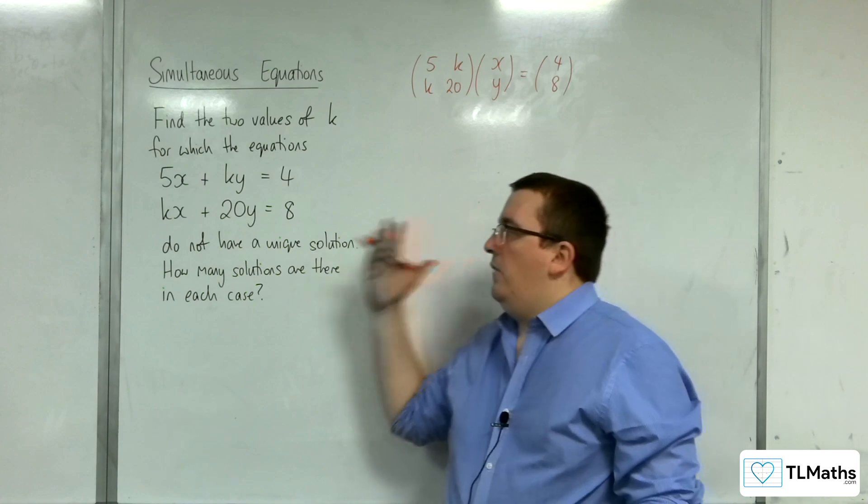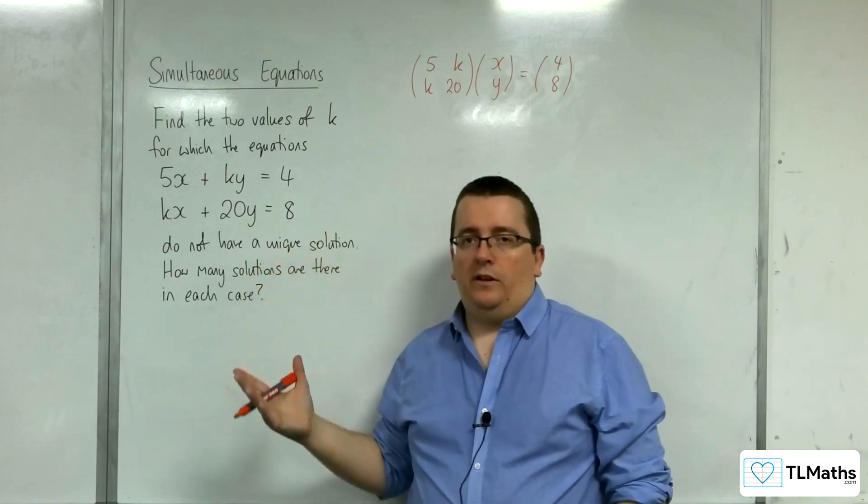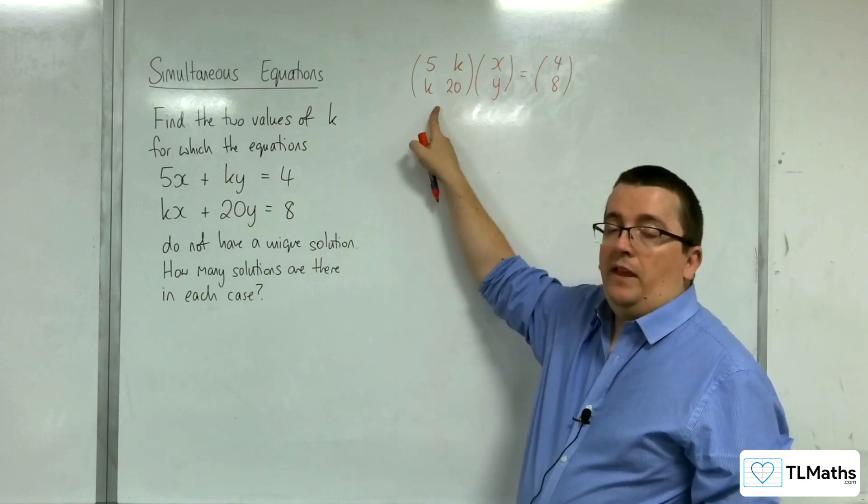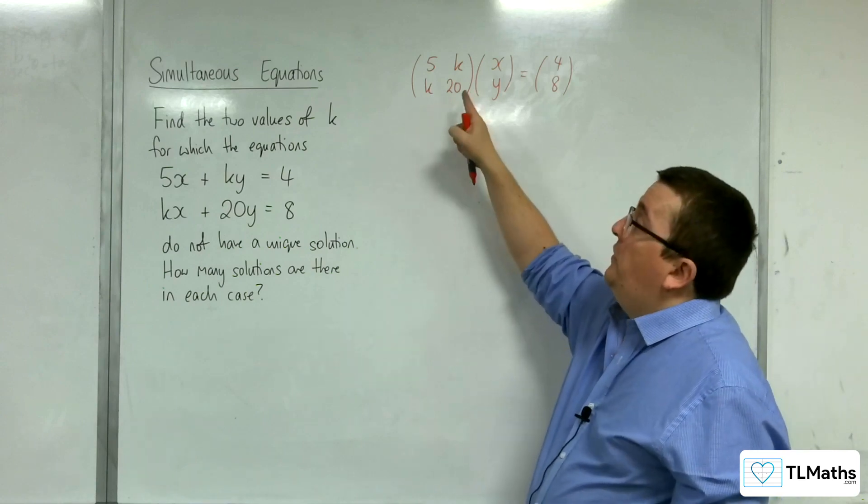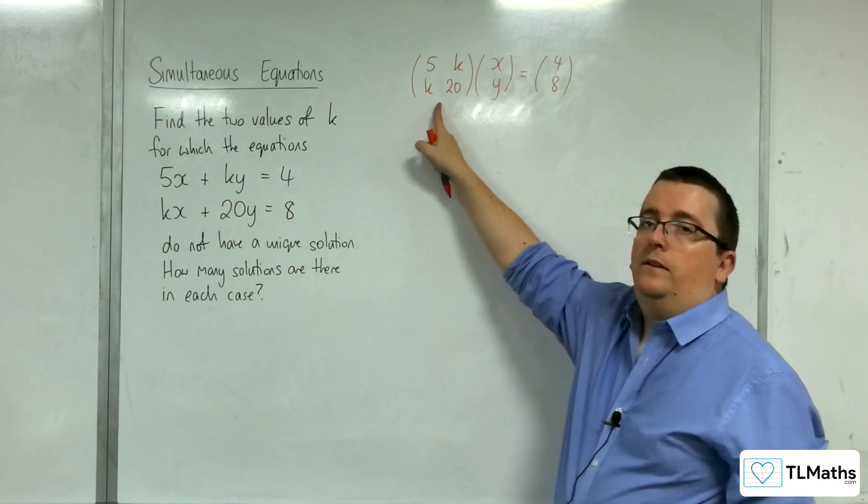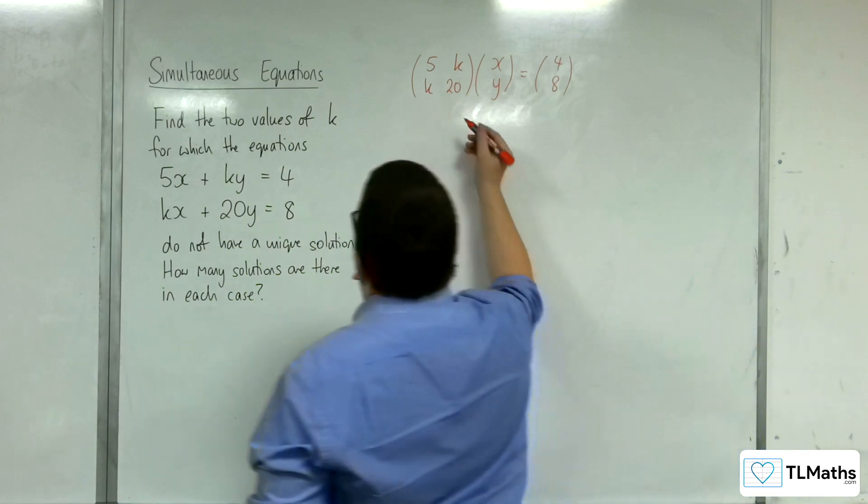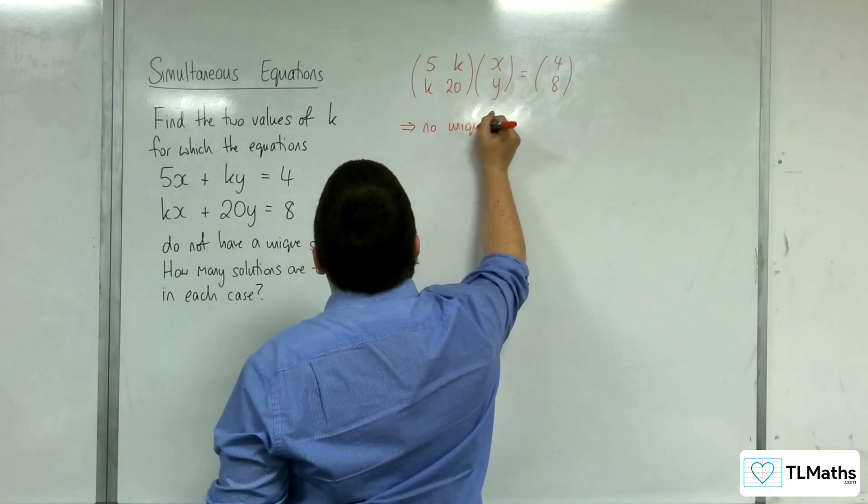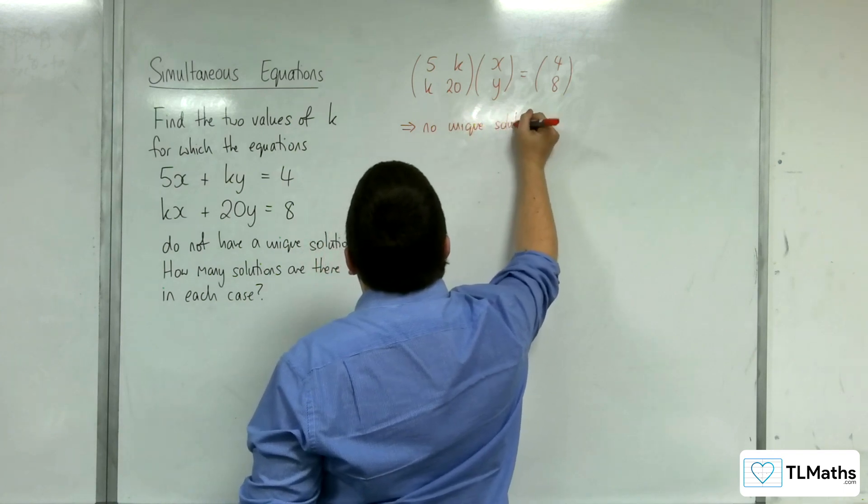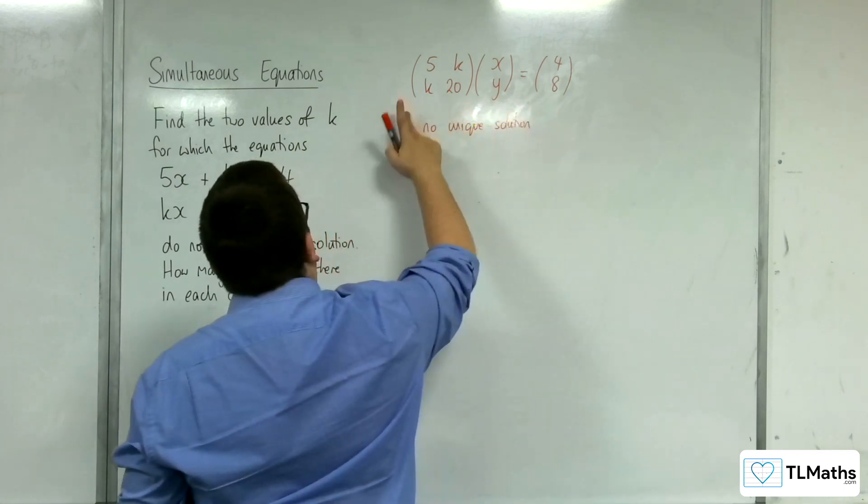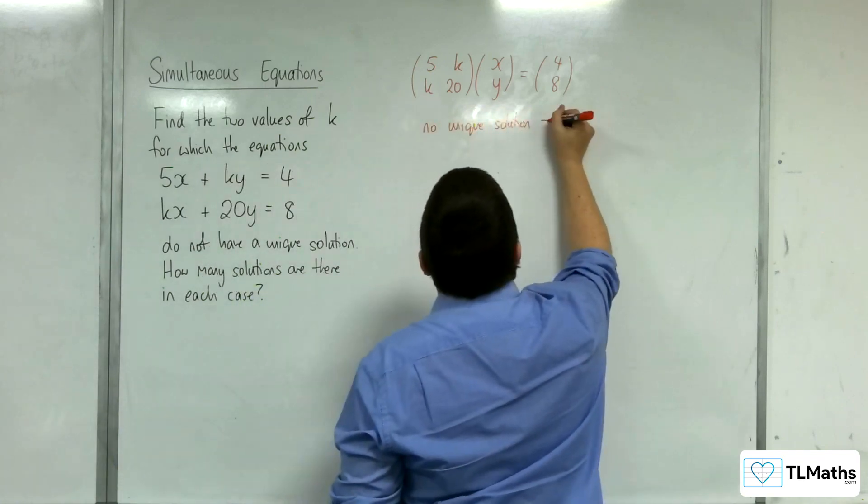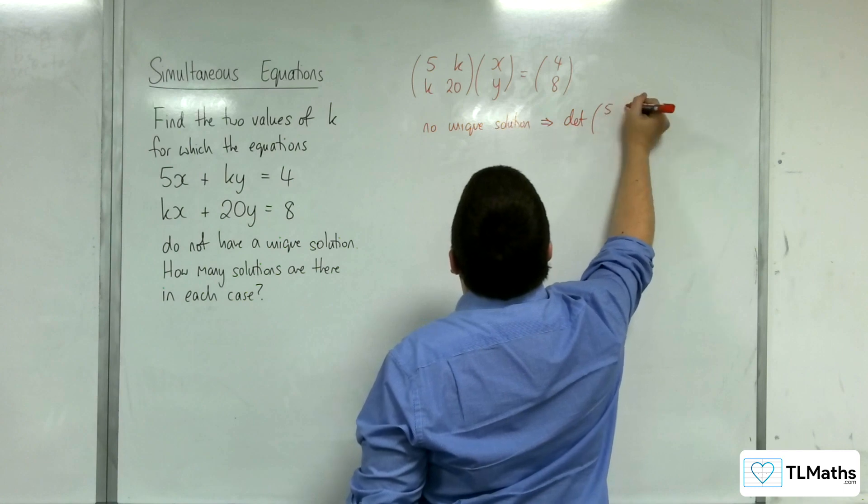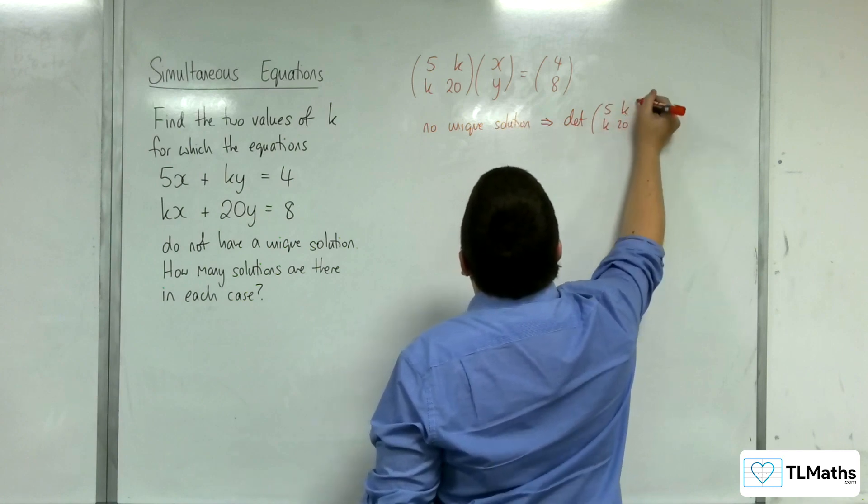Now, if there's not to be a unique solution, that would mean that this matrix has to be singular. So that means that the determinant would have to be 0. So no unique solution implies that the determinant of this matrix is 0.